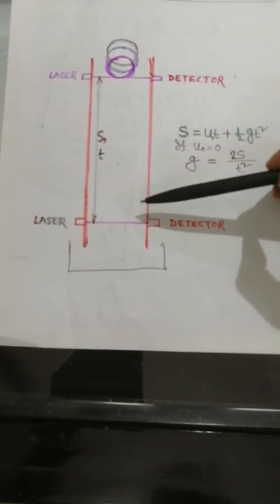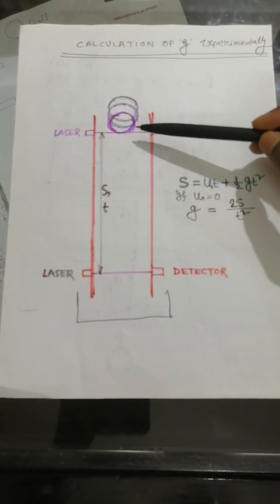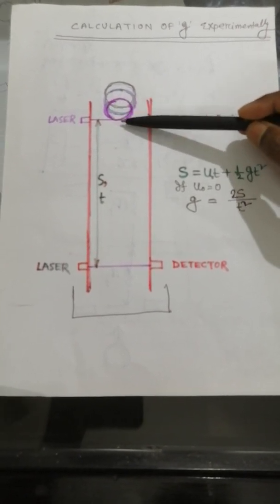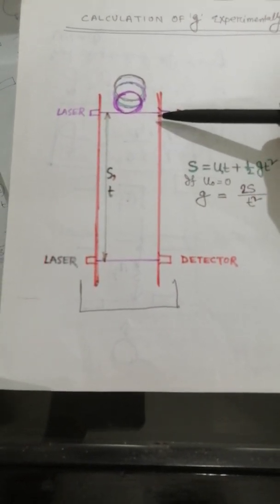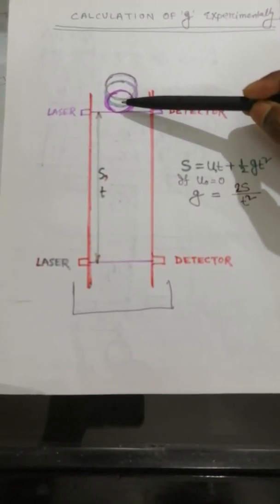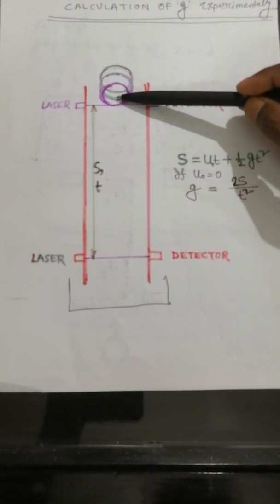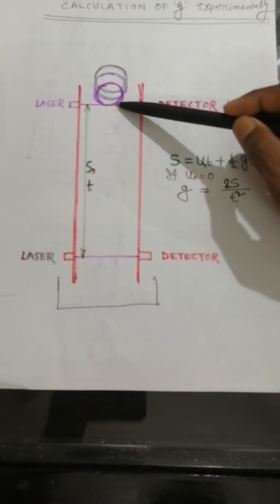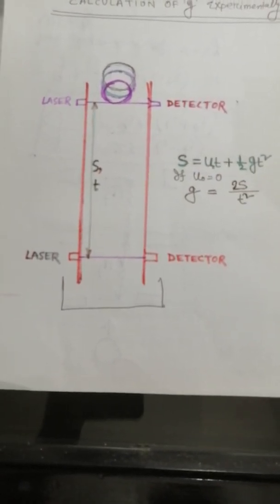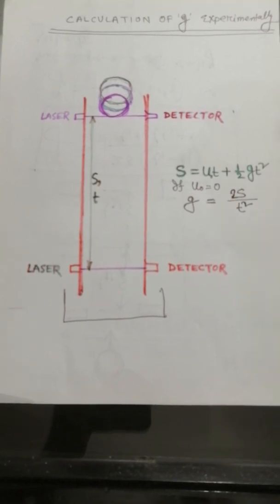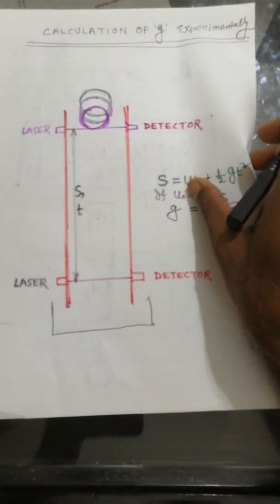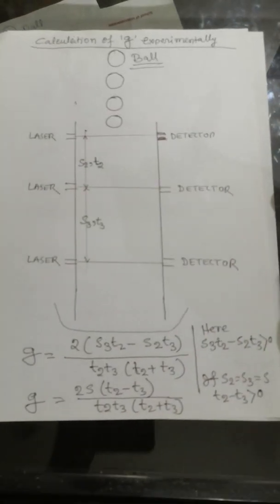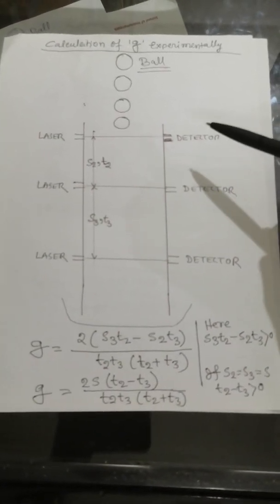But the problem of measuring g using this type of experimental system is that the object may not be at rest on the detection line. Sometimes it may fall from a slightly upper position, and in that case its initial velocity may not be 0, so there may be some calculation or experimental error. In that case, we want to find an equation where initial velocity is not a function of g.